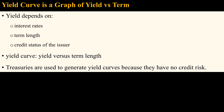The yield of bonds depends on many factors, but the primary factors are interest rates, term length, and the credit status of the issuer. The yield curve focuses on plotting yield versus term length, keeping other factors affecting yield constant. Treasuries are used to generate yield curves because they have no credit risk, so credit risk will not affect the yield. But other types of bond yields can also be used to generate yield curves.